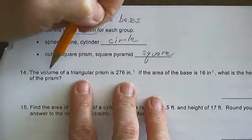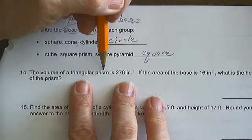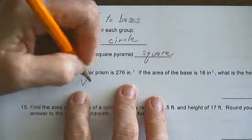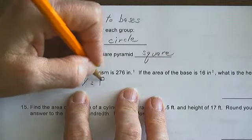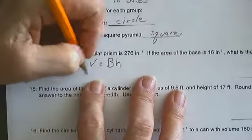First, what is the formula for volume of a prism? Volume of a prism is base times height.